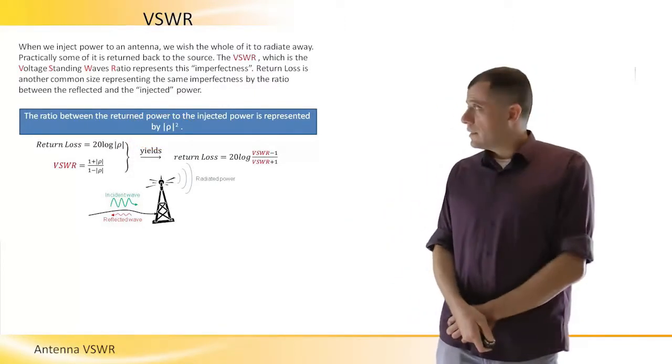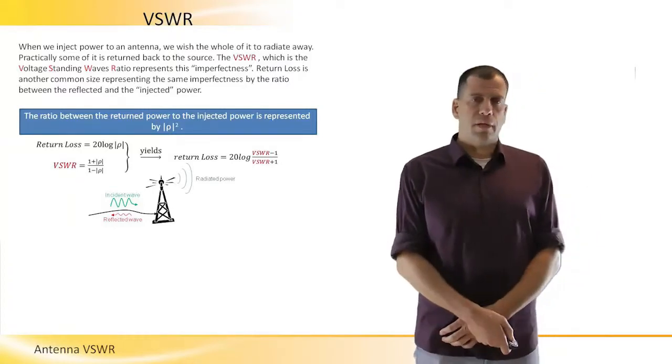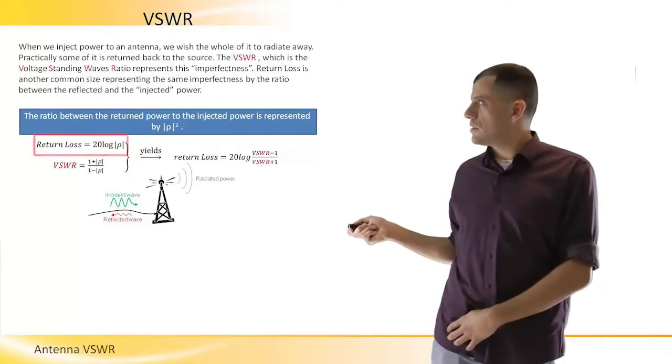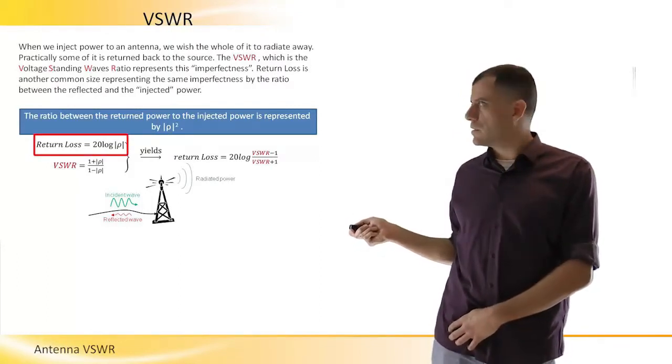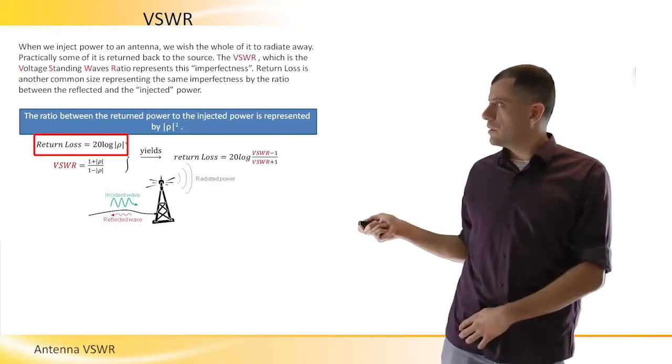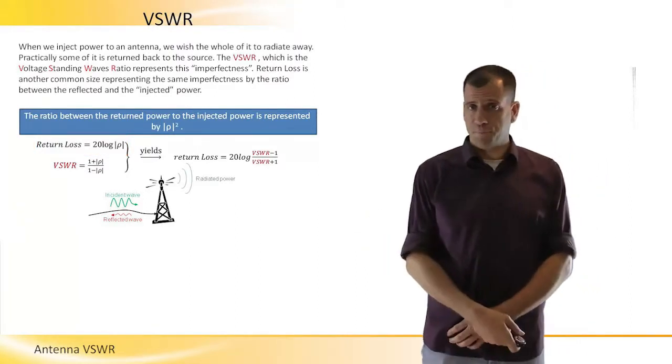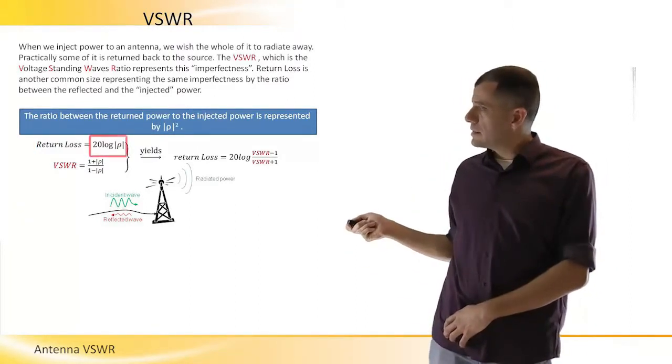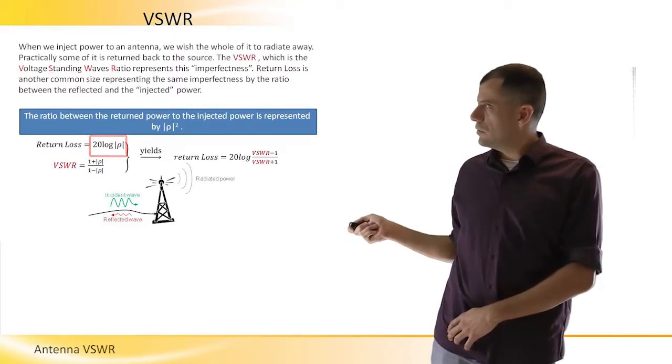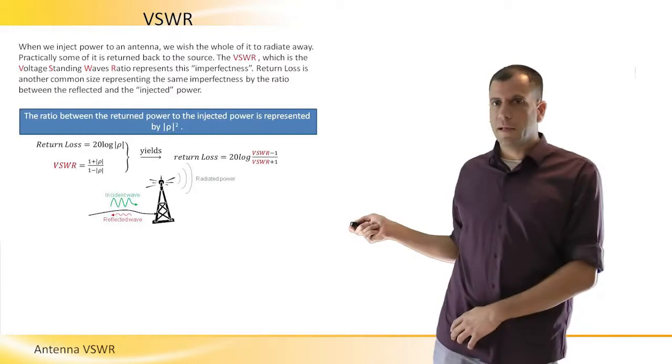Another term that is very common in specs is the return loss. The return loss is actually the same. How much do we lose relatively to the power that we have injected to the antenna? We can see here how the sizes are connected to the term rho. If we take 20 log rho, then we will get the return loss.